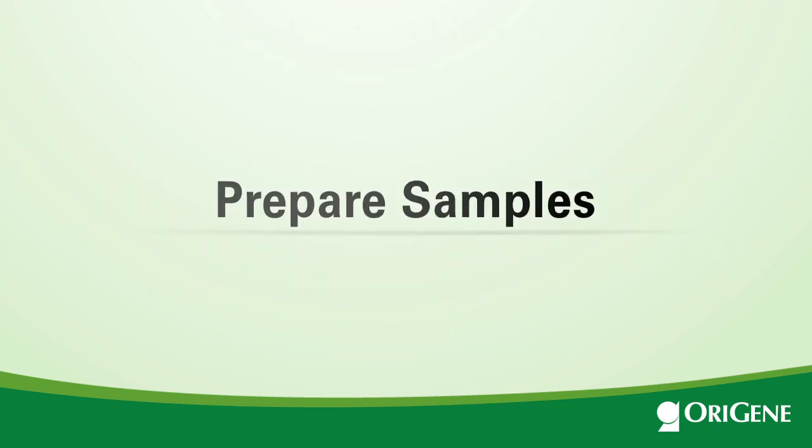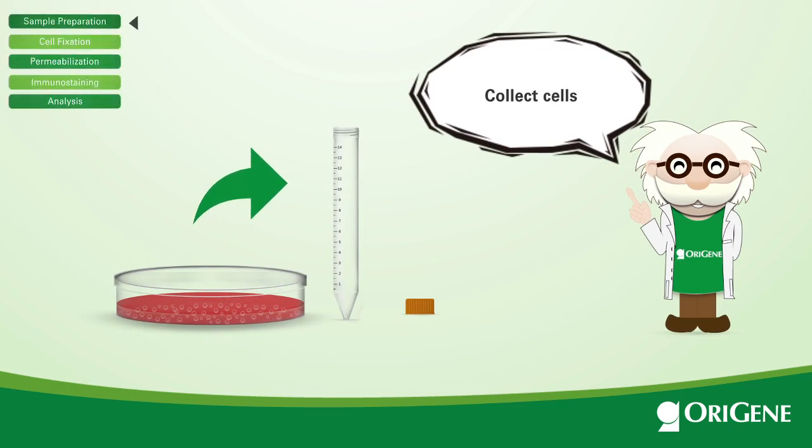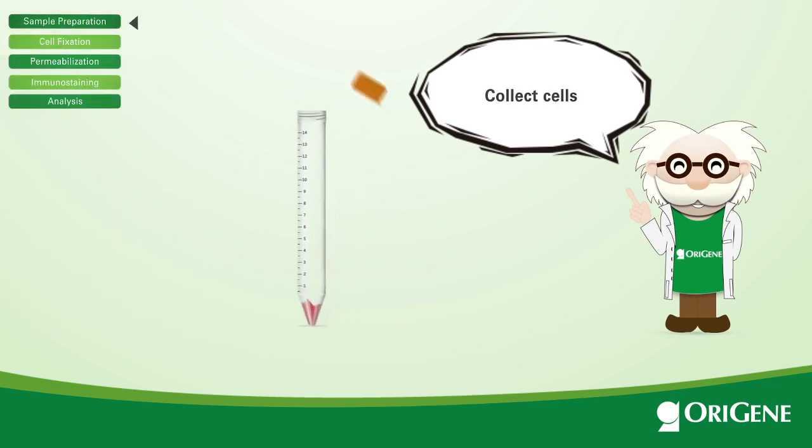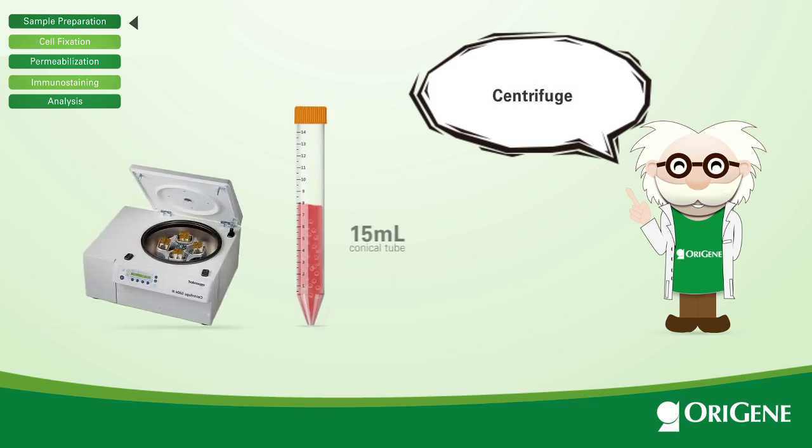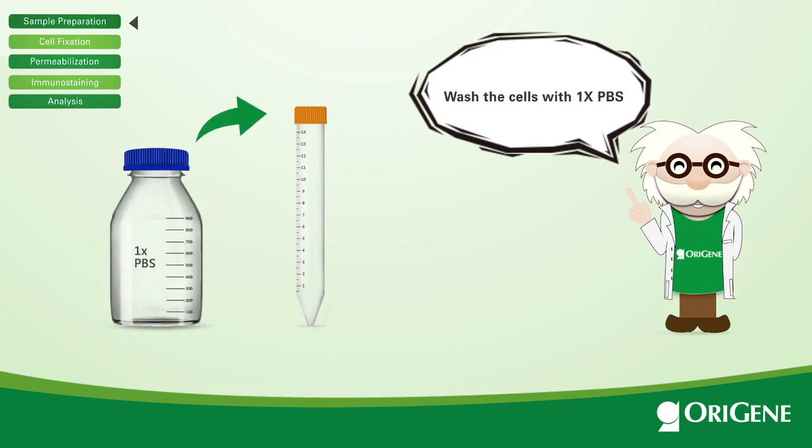The first step will be to harvest your cells by gently scraping using PBS buffer containing 5 millimolar EDTA. Collect the cells and transfer to a 15 milliliter conical tube, then centrifuge and aspirate the supernatant. Wash the cells once with cold PBS and discard the supernatant.